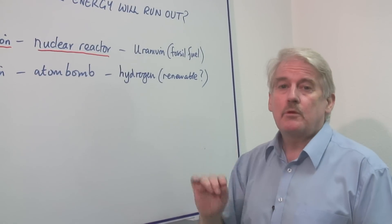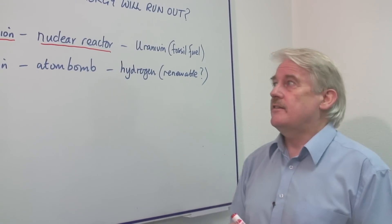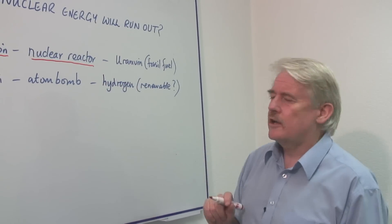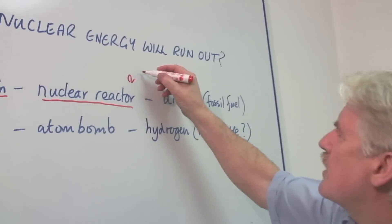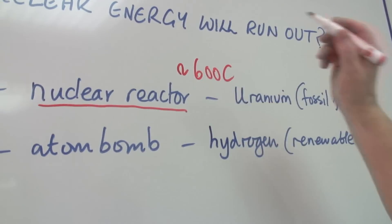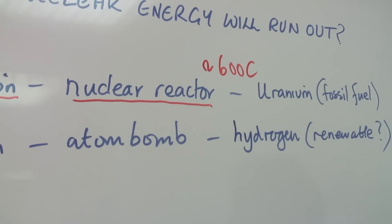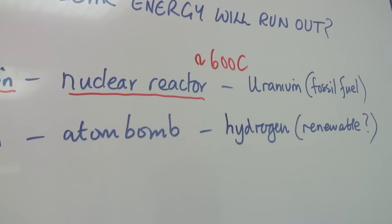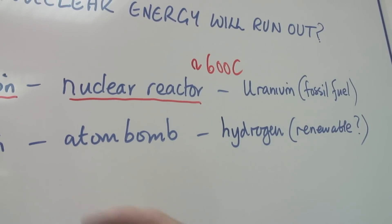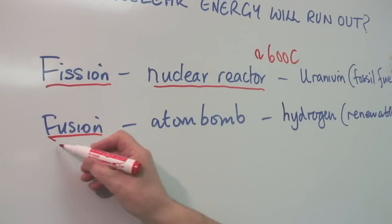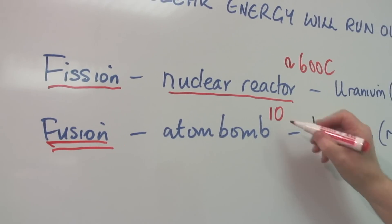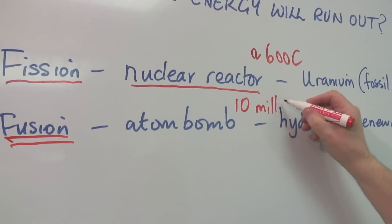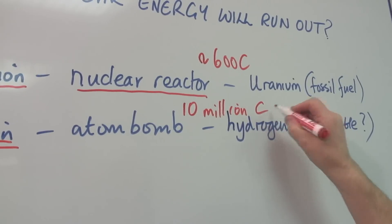The big problem with fusion is the difference in temperature. The temperature inside a nuclear reactor is something of the region maybe about 600 Celsius. So it's hot, but it's not that hot. But for a fusion reactor, you're going to have to have a temperature of 10 million Celsius.